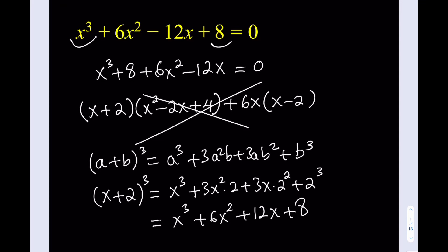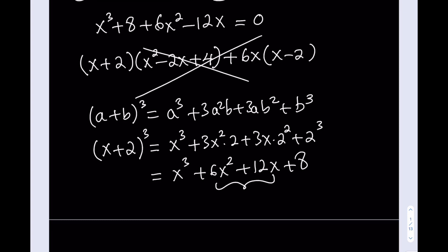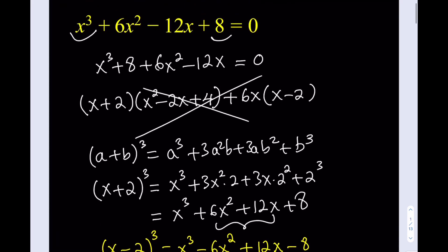So how do we fix this? Well, here's the type of thinking you need to have. What happens if I replace x with negative x or 2 with negative 2? That's amazing. Here's what I'm talking about. What happens if I proceed with x minus 2 quantity cubed instead of x plus 2 quantity cubed? Let's see what happens. Well, I get x cubed and then I get minus 6x squared, I get plus 12x and minus 8. Now let's compare this to what we have. Are they similar?